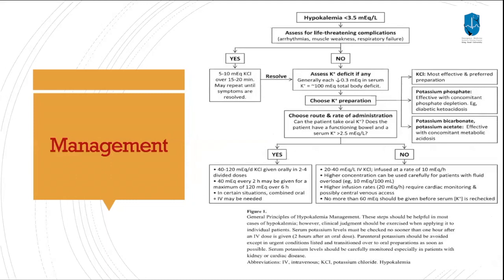For the management of hypokalemia: if there are signs of life-threatening complications, we correct directly. If not, it depends on the patient. If the patient can tolerate orally, has functional bowel, and serum K is more than 2.5, we go with oral supplementation. If not, we give IV potassium — 20 to 40 mEq per liter of IV potassium chloride, infused at a rate of 10 mEq per hour. Higher concentrations can be used carefully for patients with fluid overload. Infusion rates higher than 20 mEq per hour require cardiac monitoring and possible central venous access. No more than 60 mEq should be given before serum potassium is rechecked.